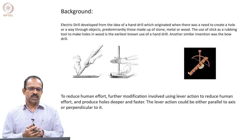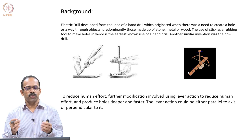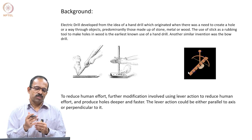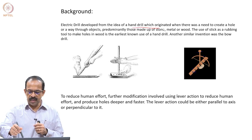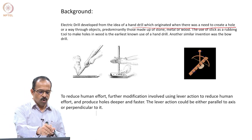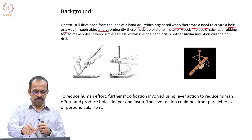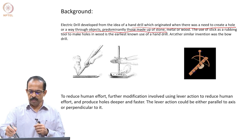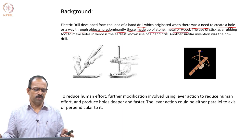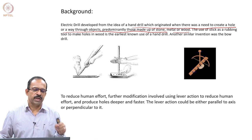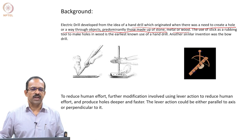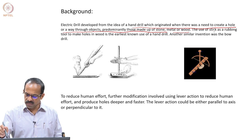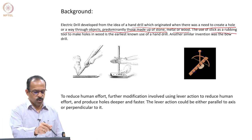Whenever you try to understand a product, you need to have a bit of understanding of its history and how it evolved over time. The electric drill developed from the idea of a hand drill, which originated when there was a need to create a hole through objects — predominantly those made of stone, metal, or wood. That was the fundamental requirement. People used to use a stick as a rubbing tool to make holes in very early times, then it moved to stone and metal.